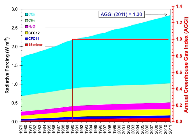If output of this gas into the box ceased, then after time TAU its concentration would decrease by about 63%. The atmospheric lifetime of a species therefore measures the time required to restore equilibrium following a sudden increase or decrease in its concentration in the atmosphere. Individual atoms or molecules may be lost or deposited to sinks such as the soil, the oceans and other waters, or vegetation and other biological systems, reducing the excess to background concentrations.